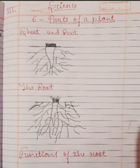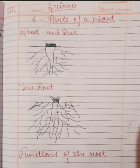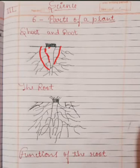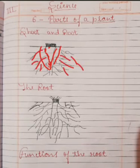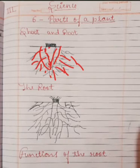What is a taproot? A taproot is when the main root grows from the end of the stem and many small roots grow from the main root. You can see in this diagram — there is one main root, and with the help of that main root, many small roots grow. This is known as a taproot.